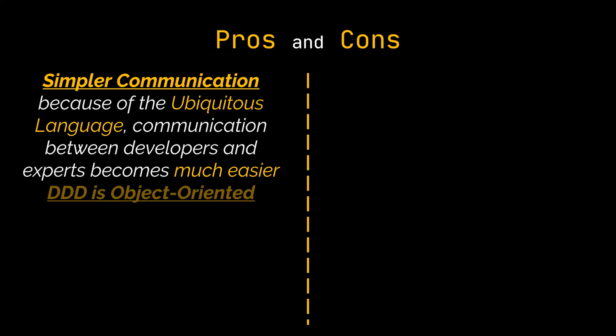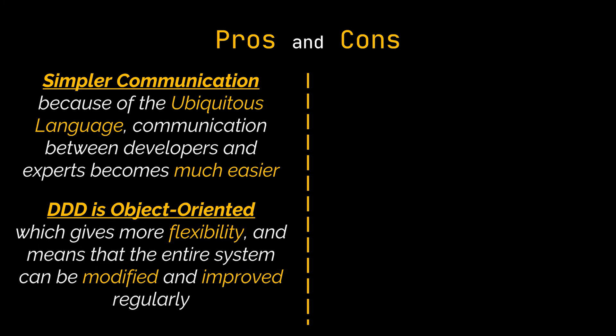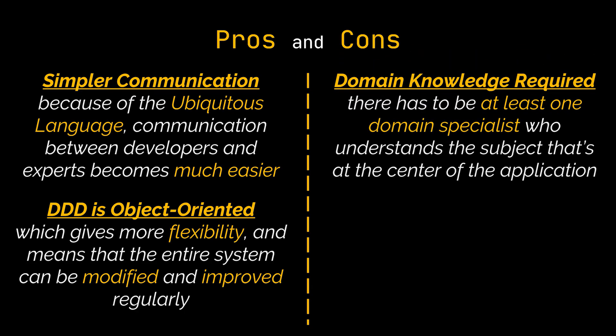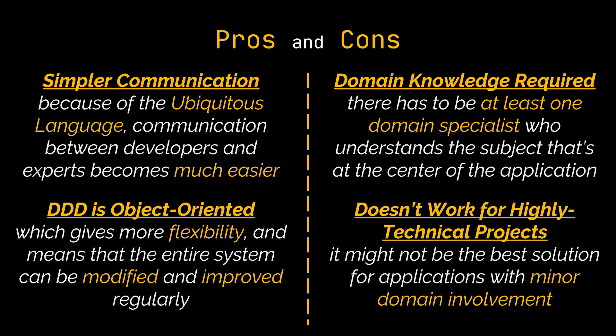Additionally, since DDD is object-oriented, everything about the domain is based on objects, allowing for more flexibility — the entire system can be modified and improved regularly. However, one of the main downsides of DDD is that deep domain knowledge is required. Even for the most experienced development teams, there has to be at least one domain specialist who understands the precise characteristics of the subject at the center of the application. Moreover, DDD might not work best for highly technical projects — it is perfect for applications with complex business logic, but may not be the best solution for applications with minor domain involvement but high technical complexity.